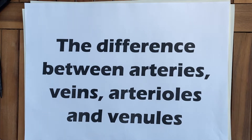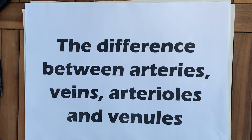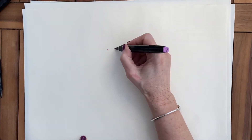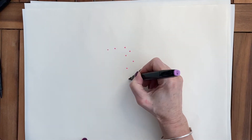This is a tutorial about the differences between arteries, veins, and the smaller arterioles and venules. It covers the key features of each, their role in the cardiovascular system, and by the end you will be able to compare all four.